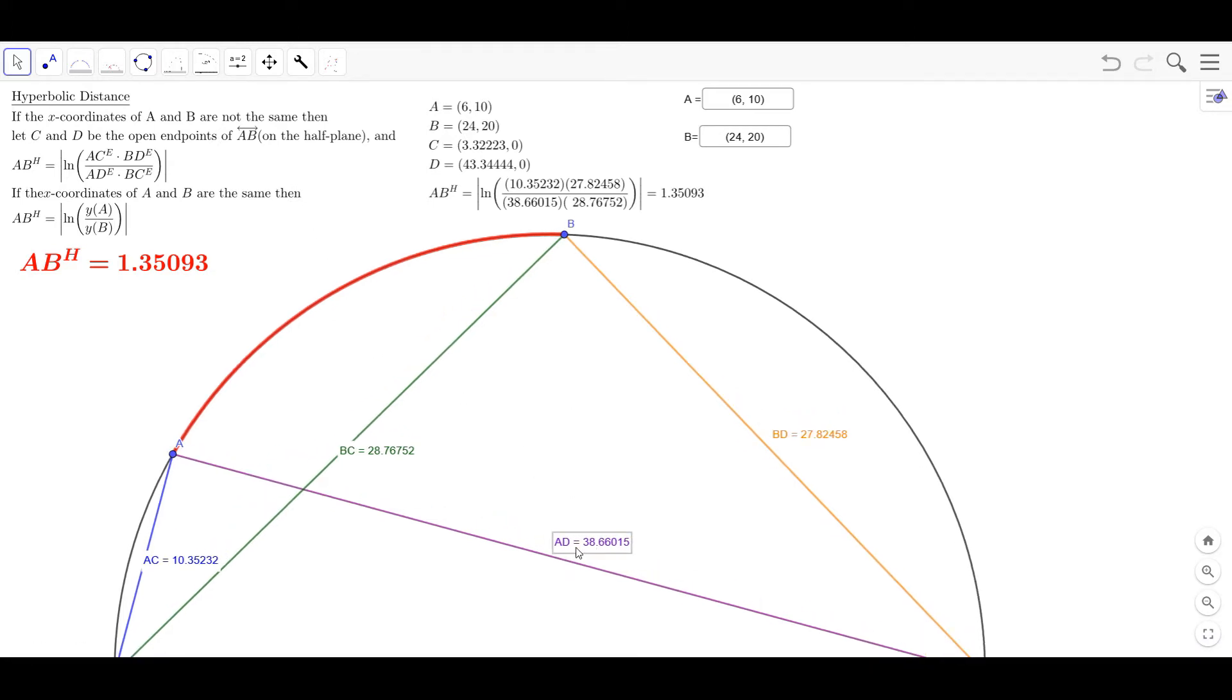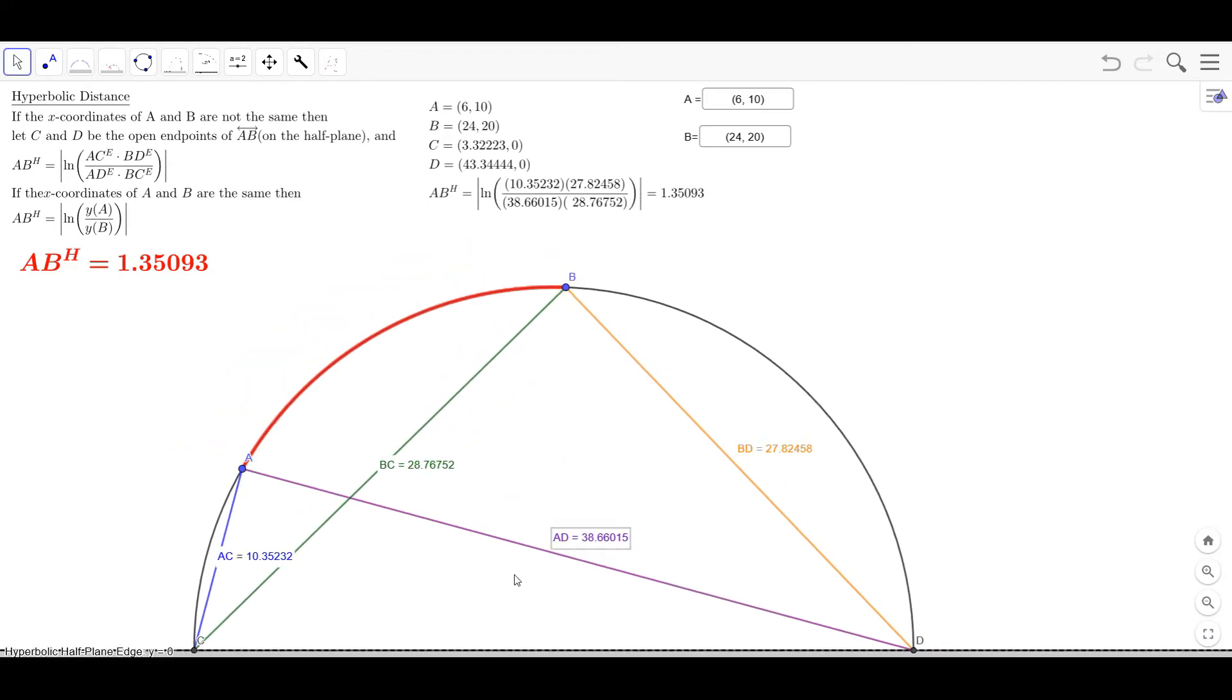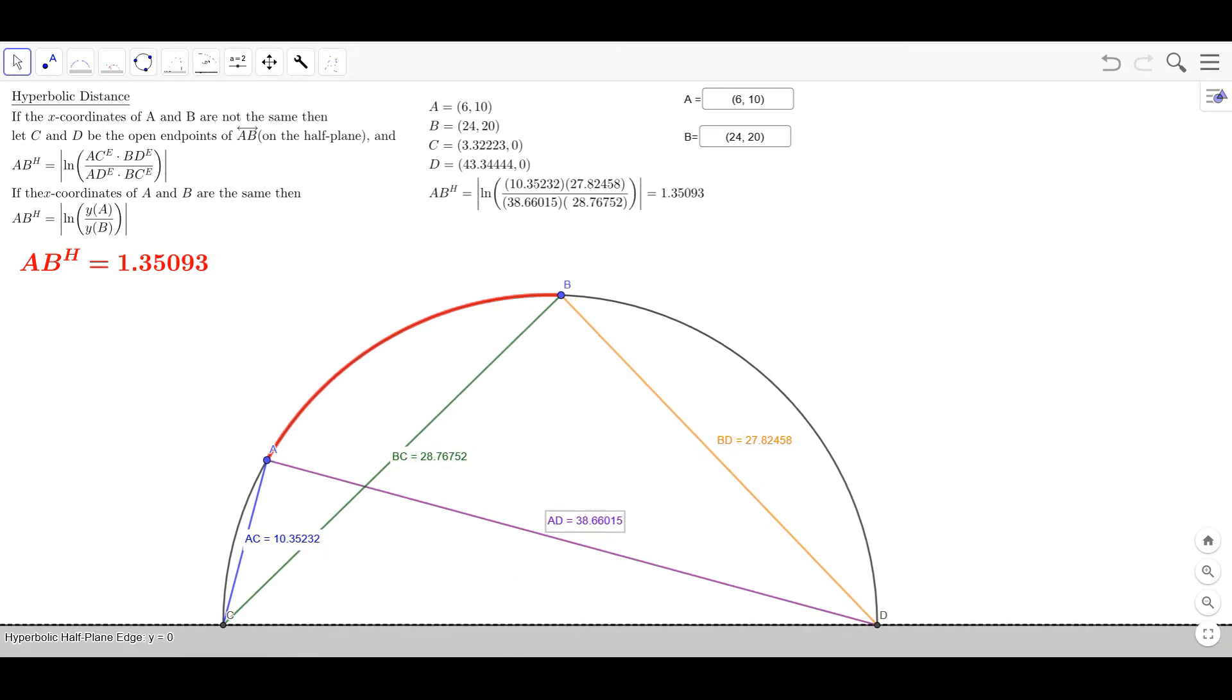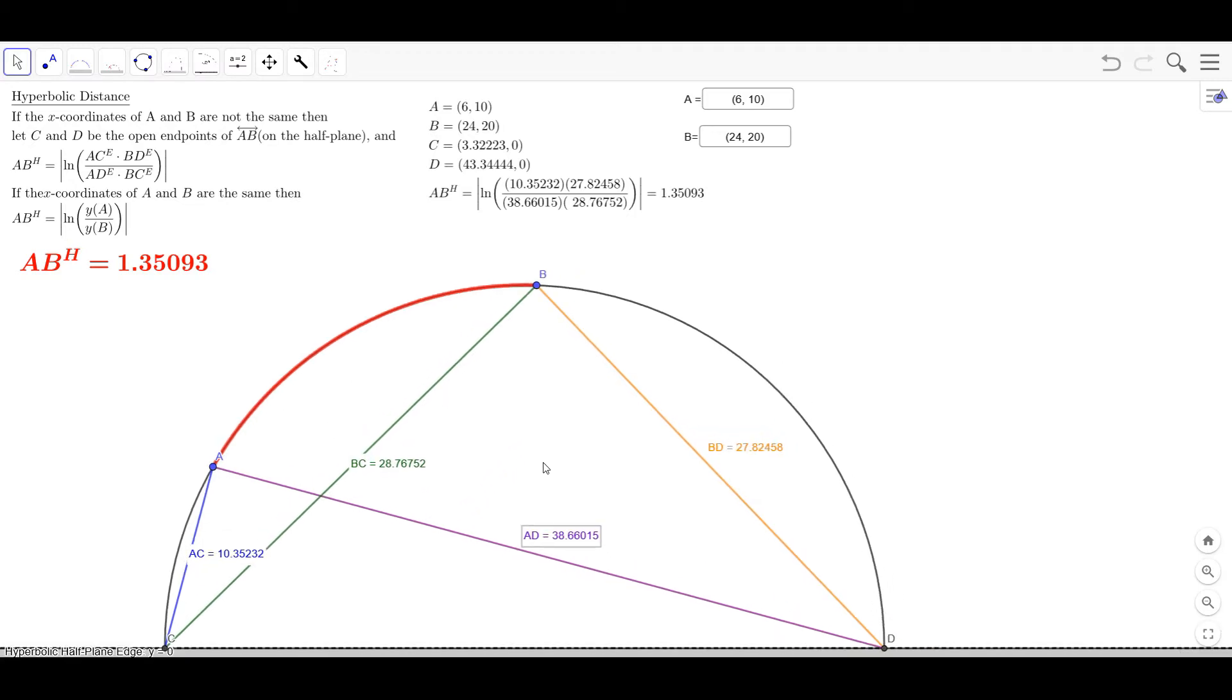In other words just use the regular distance in the normal distance tool there. And so anyway you find all four of these distances: A to C, A to D, B to C, and B to D, and then you use this formula here.